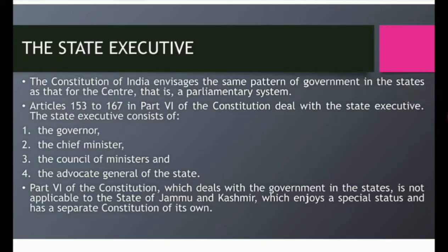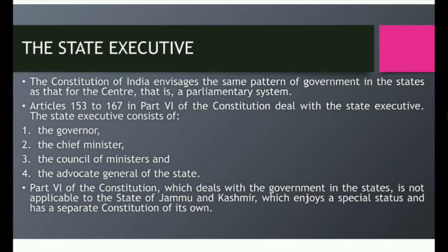The State Executive. The Constitution of India envisages the same pattern of government in the states as that for the center, that is a parliamentary system. The State Executive consists of the Governor, the Chief Minister, the Council of Ministers, and the Advocate General of the State. Part 6 of the Constitution, which deals with the government in the states, is not applicable to the state of Jammu & Kashmir, which enjoys a special status and has a separate constitution of its own.